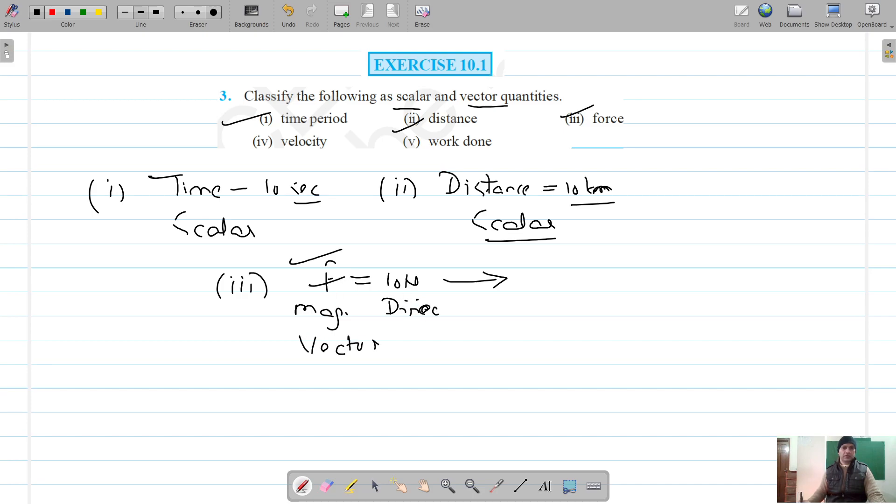Fourth one is velocity. We know that speed with direction is called velocity, so this is a vector quantity.